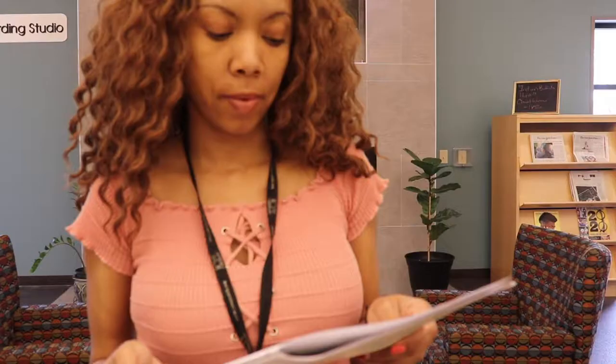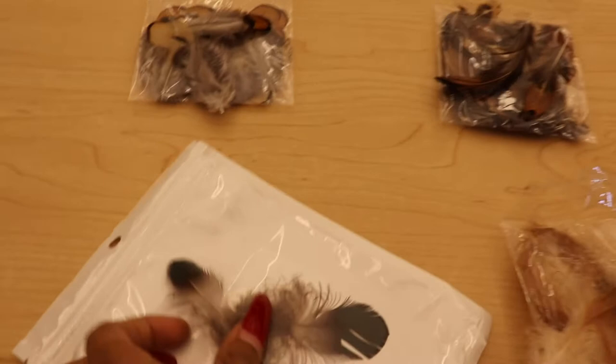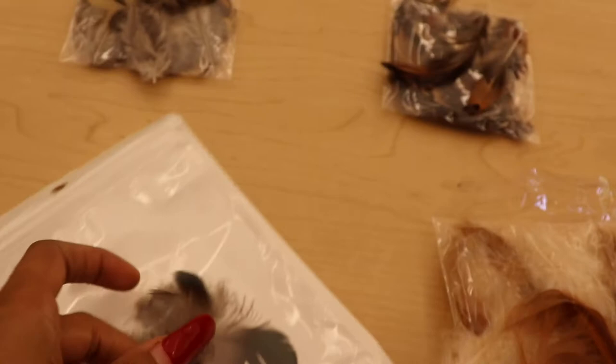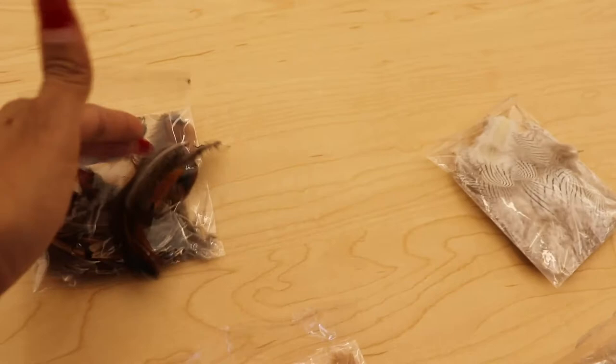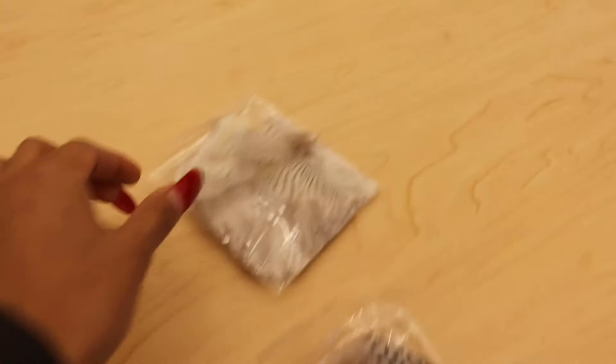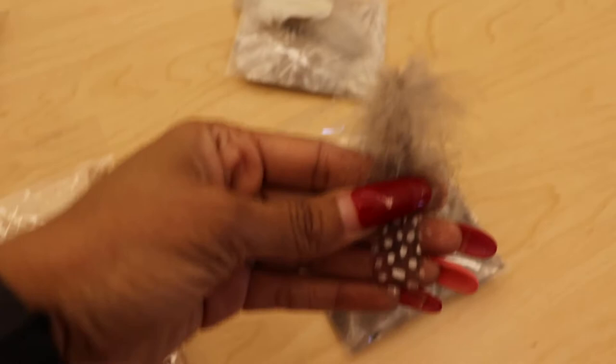Now let's look at some feathers. After looking at the feathers, I want you to go to step four on your sheet of paper from part one and draw a close-up picture of a bird feather. These are some different feathers I have in my collection — they're soft, notice pretty colors, different sizes. Go ahead and sketch a feather on your sheet of paper — sketch what a feather looks like to you.